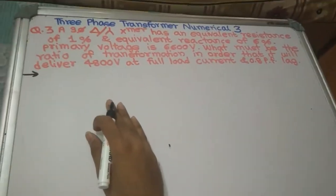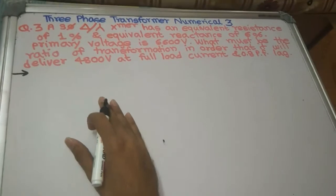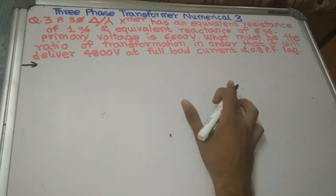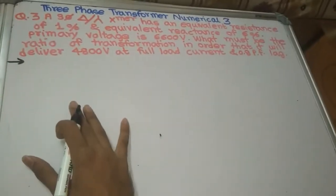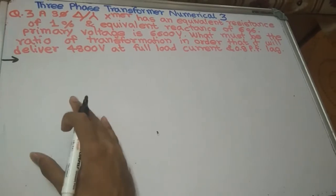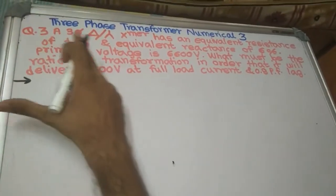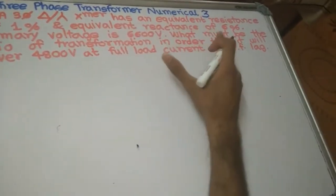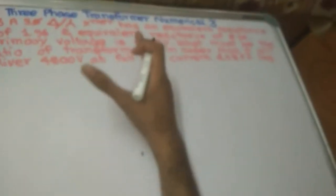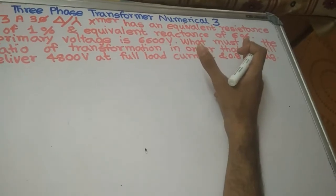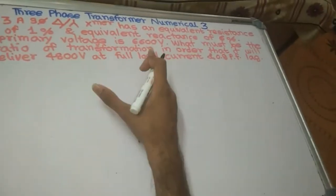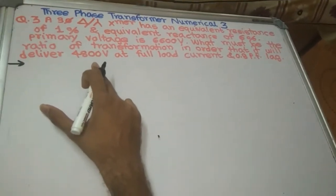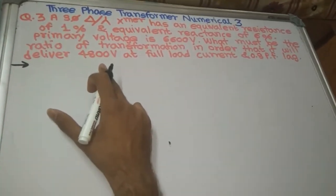Hi friends, welcome to our channel. In this episode we are going to solve numerical three of a three-phase transformer, which is of a different type than the other two numericals we have seen in the last episodes. A three-phase delta-star transformer has an equivalent resistance of 1% and equivalent reactance of 6%. Primary voltage is 6600 volt. What must be the ratio of transformation in order that it will deliver 4800 volt at full load current and 0.8 power factor lagging?